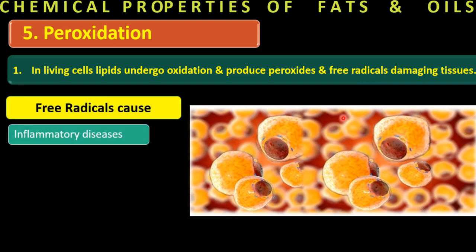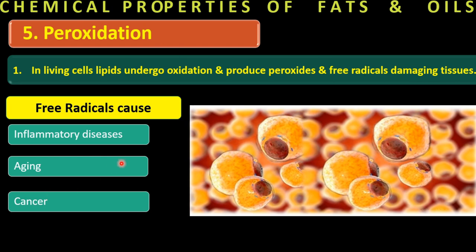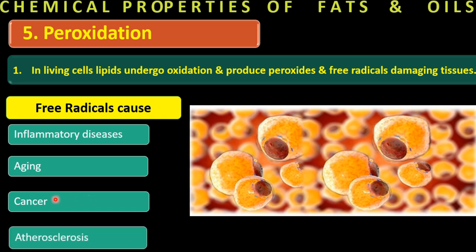Free radicals cause number one: inflammatory diseases — causing pain and redness in the body. Number two: aging — if you want to avoid aging, you must protect fats from oxidation, because peroxidation of fats creates free radicals which cause aging. Number three: cancer — accumulation of free radicals damages cells and can lead to cancer. And they can also lead to atherosclerosis as part of inflammatory disease.